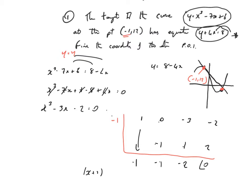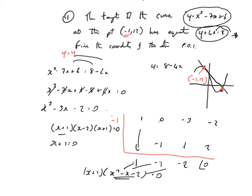I've now got (x plus 1)(x squared minus x minus 2) equals 0. I'm now going to factorise — two numbers that multiply to give minus 2 and add to give minus 1: that's minus 2 and 1. So it's (x plus 1)(x minus 2)(x plus 1) equals 0. That gives x plus 1 equals 0 twice, and x minus 2 equals 0, so x equals minus 1 and x equals 2. The other point of intersection occurs at x equals 2.